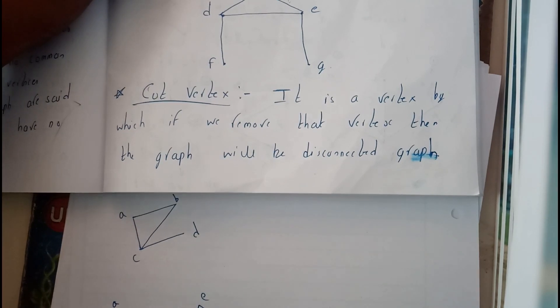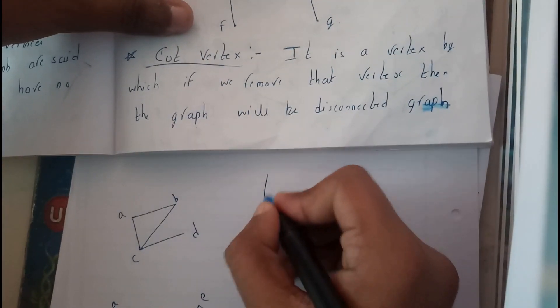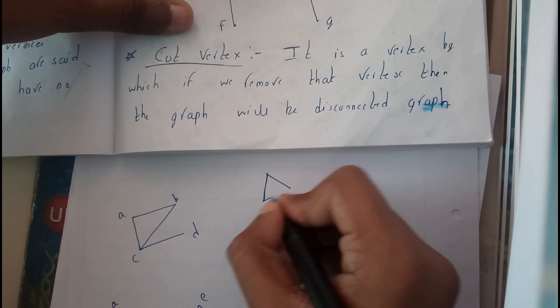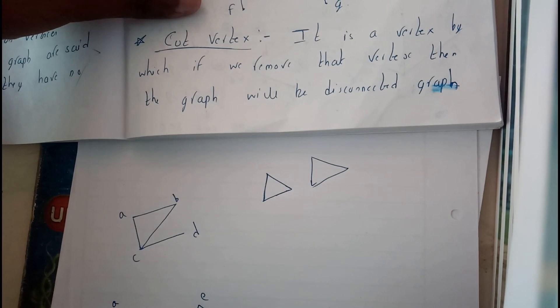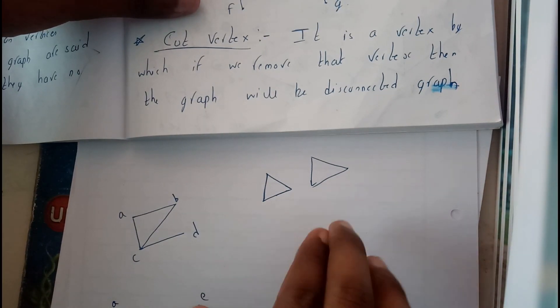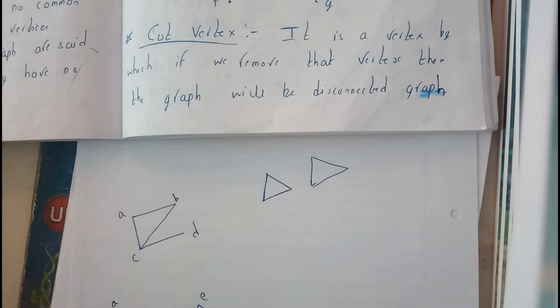We need to know what is a disconnected graph now. A disconnected graph is a graph like two graphs which are separate with no joint. These two are disconnected graphs which have no connection between them.